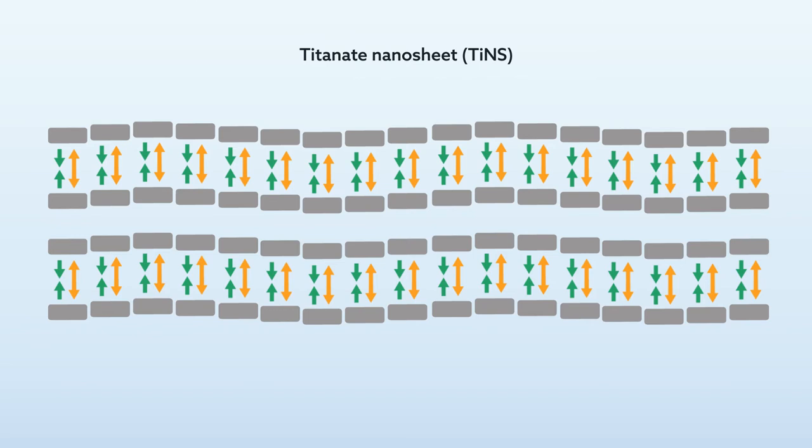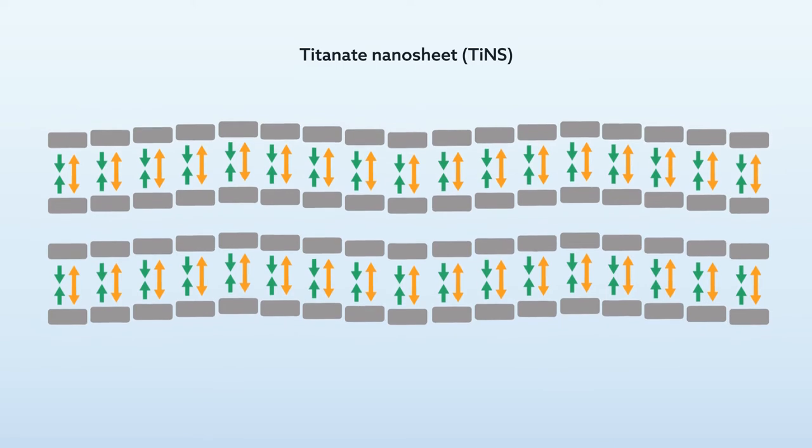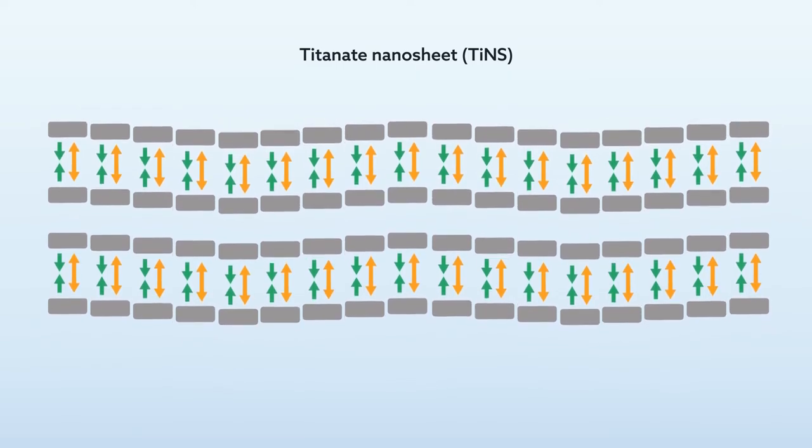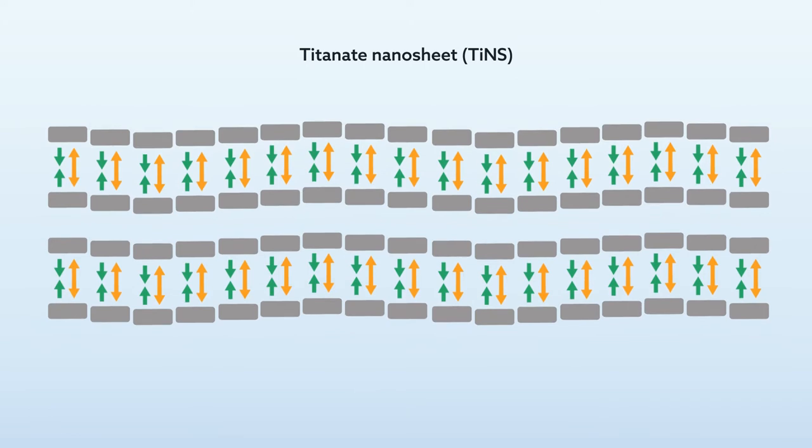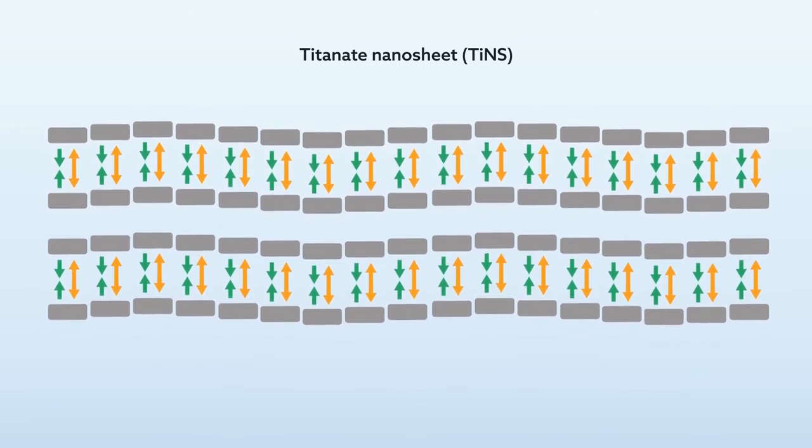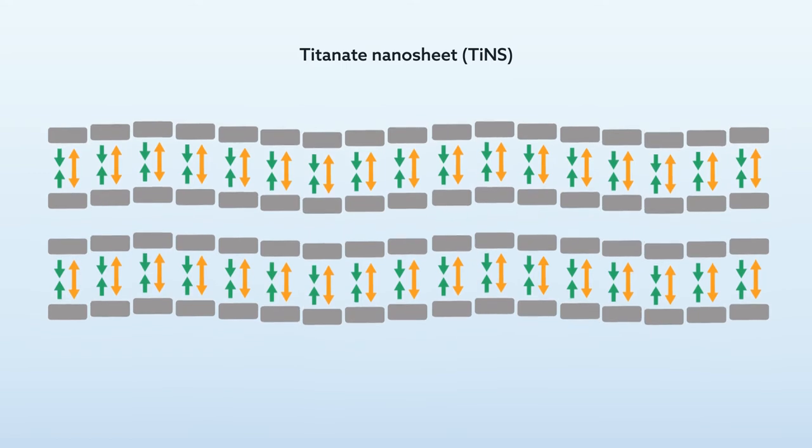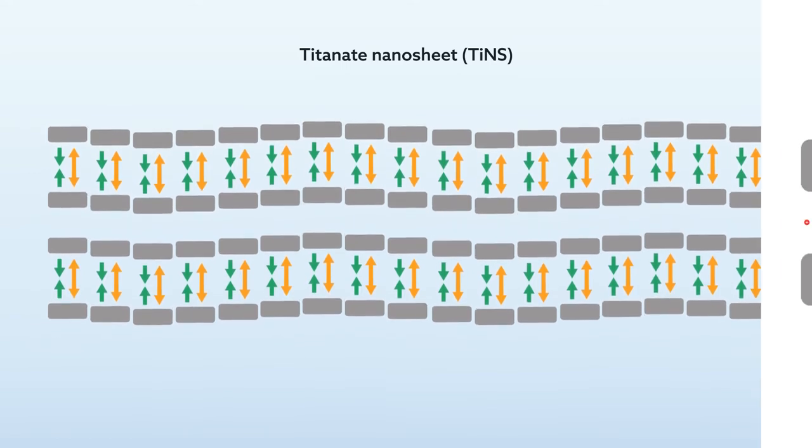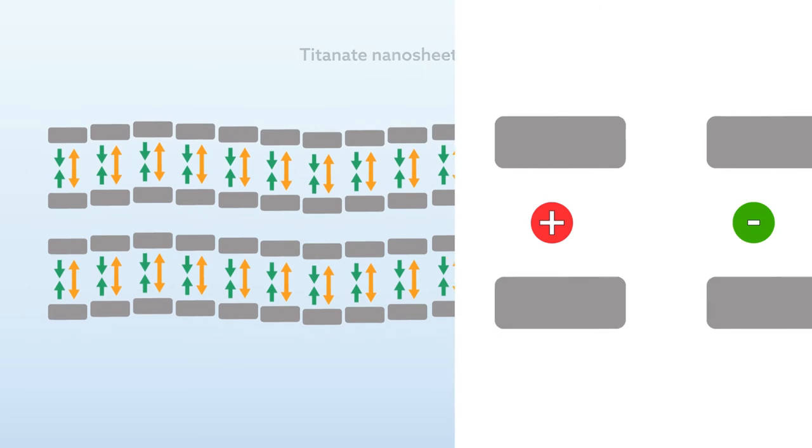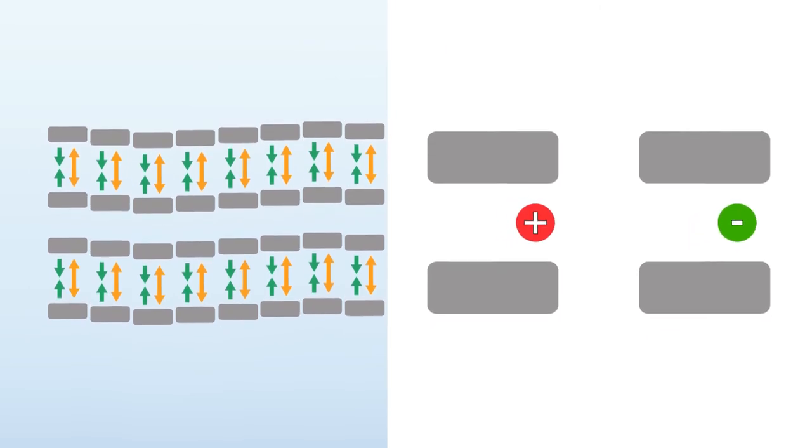But something interesting happens when you let some air enter the system. Ions, some negative, some positive, start to form. Together, these charged particles decrease the repulsive force between parallel layers of titanium oxide plates. This causes the plates to rotate slightly in position, but not all at once.